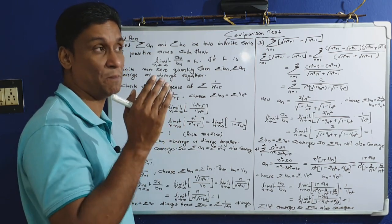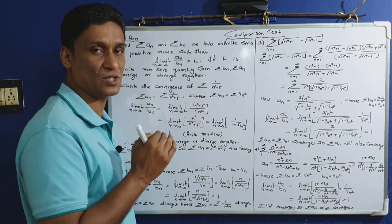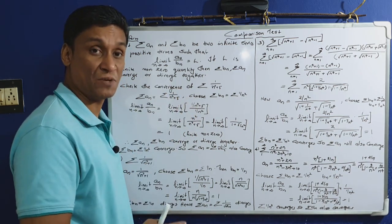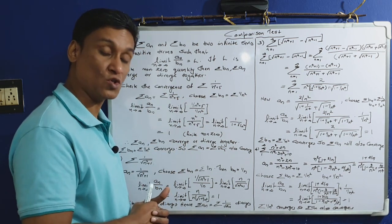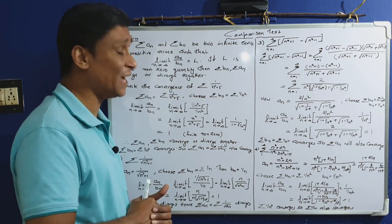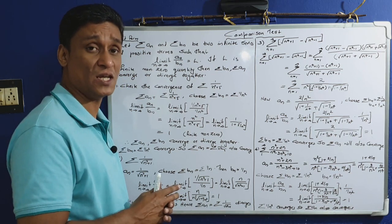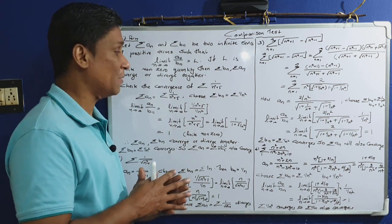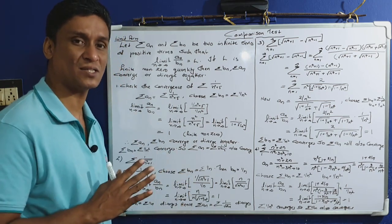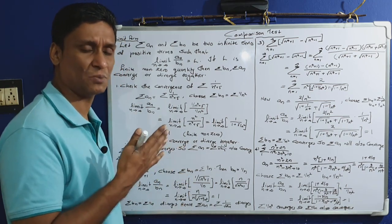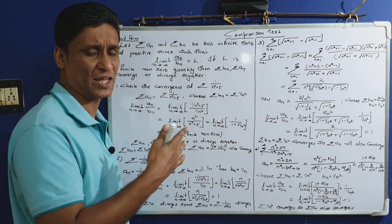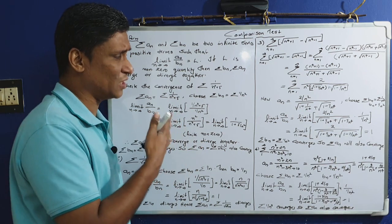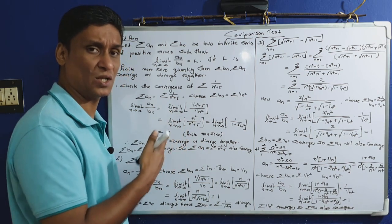Sigma b_n and sigma a_n behave the same: if sigma b_n converges then sigma a_n converges, and if sigma b_n diverges then sigma a_n diverges, provided the limit L is a finite nonzero quantity and both sigma a_n and sigma b_n are infinite series of positive terms. This is the comparison test. Proof is not required in our course.